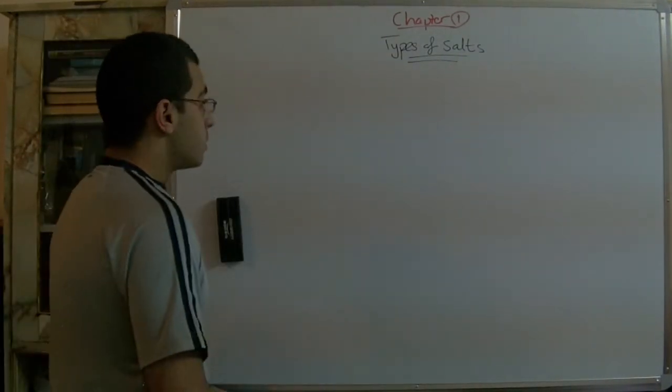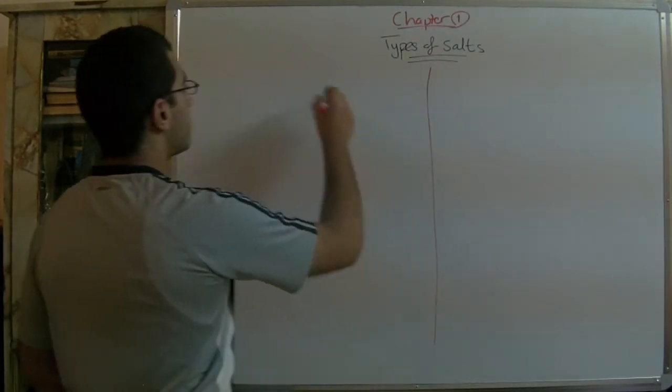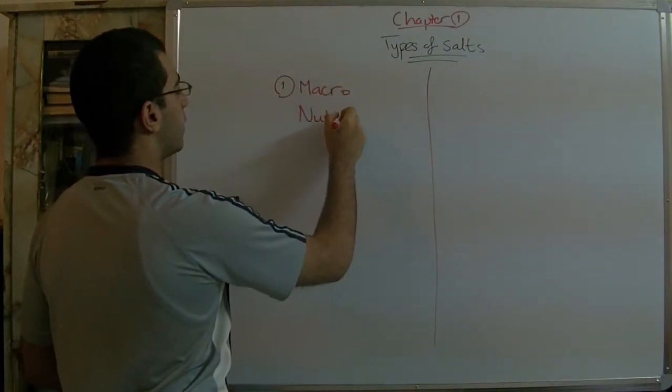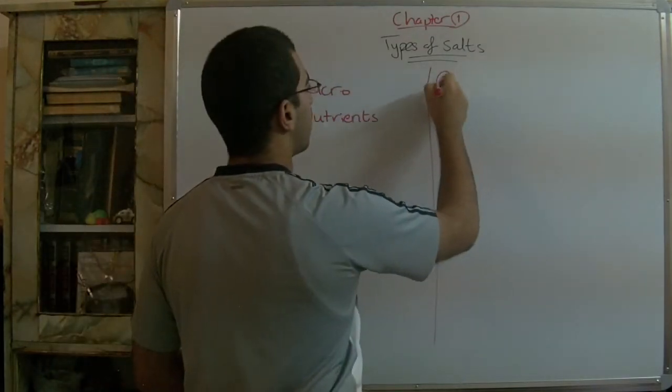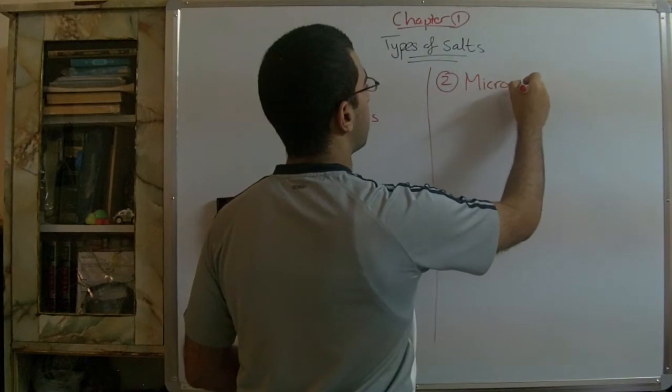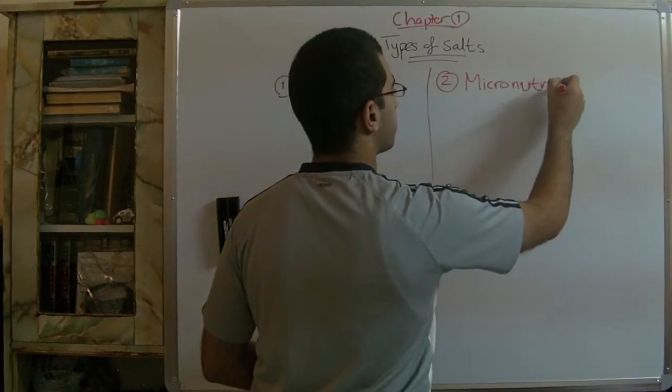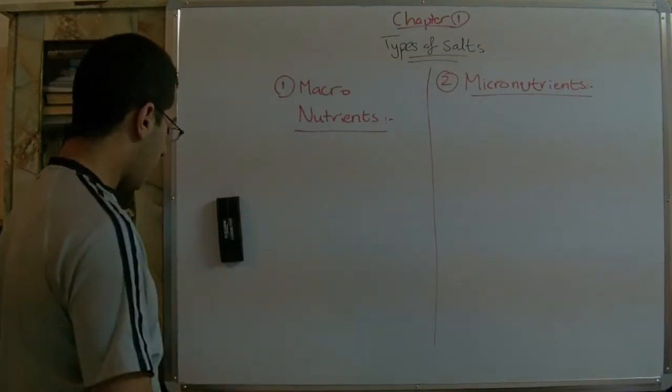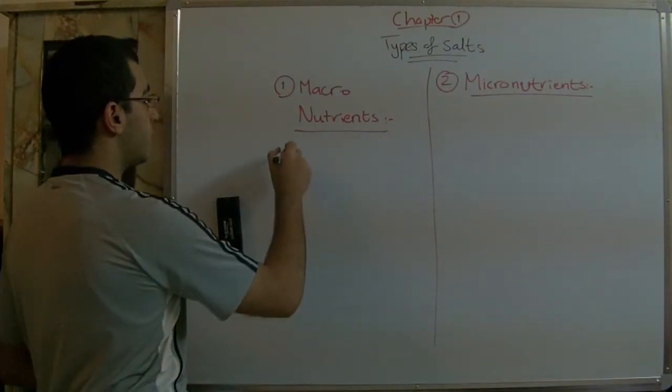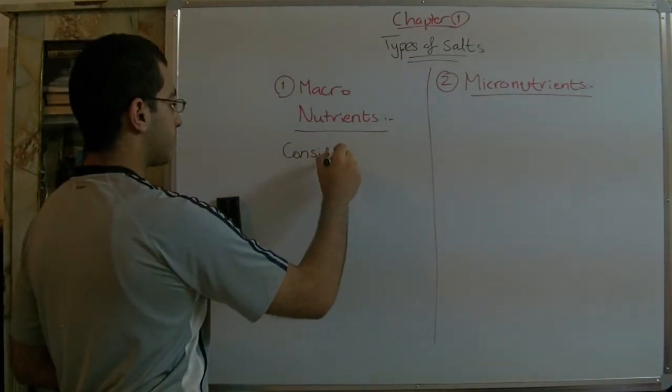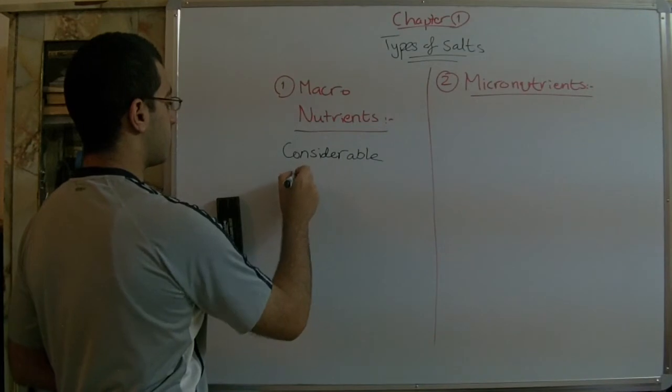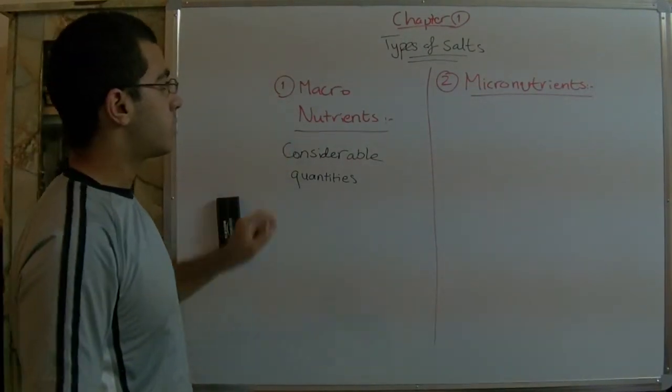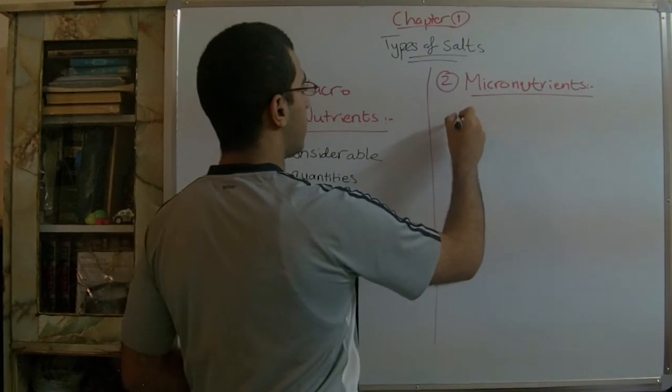We have two types of salts. The first one is called macronutrients and the second one is called micronutrients. The macronutrients are used by the plant in considerable quantities. In other words, the plant needs much of these salts.